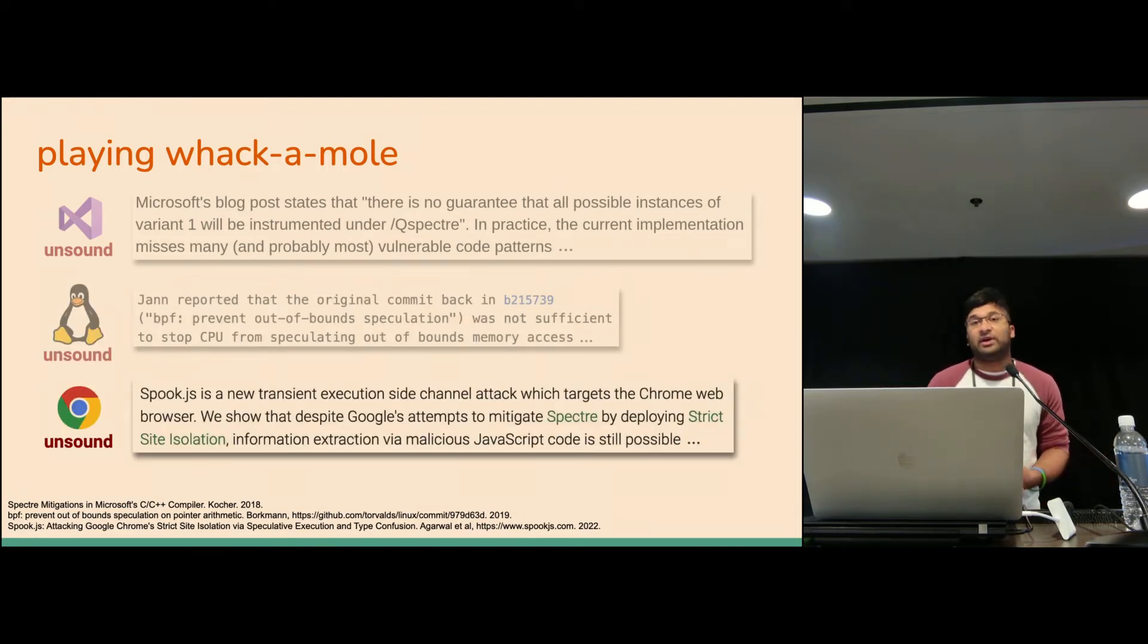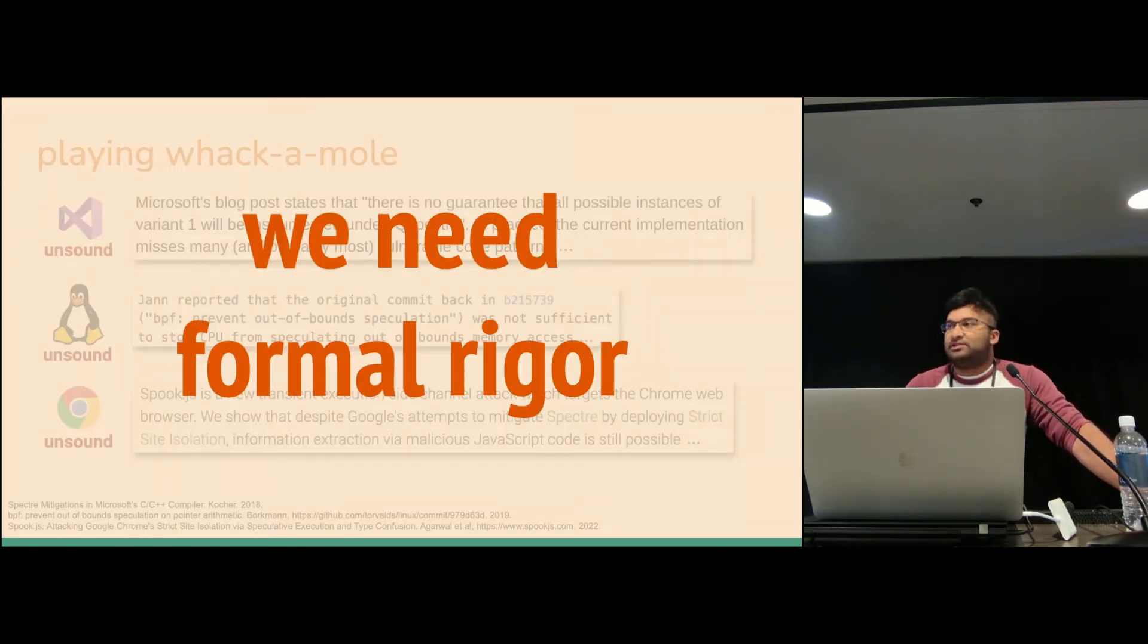And Google Chrome, as the browser, has actually been trying to prevent Spectre attacks as well from malicious JavaScript. They've introduced what they call strict site isolation to separate processes and try to make sure that they can't affect each other. If you stick around later in this track, you'll hear folks talking about spook.js, which shows that this actually doesn't really work. The reason that these are all kind of failing is that there is no underlying principled approach here. What we really need is formal methods to determine what exactly we're going to do and make sure we have a sound approach to protecting against these Spectre attacks.